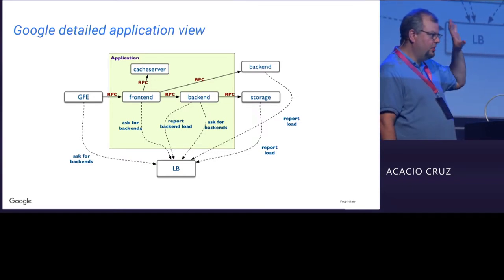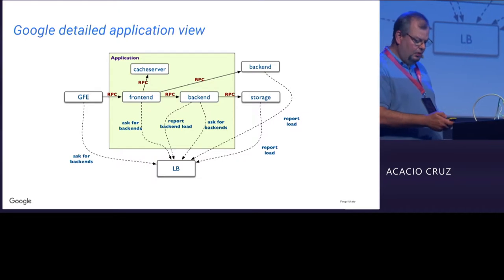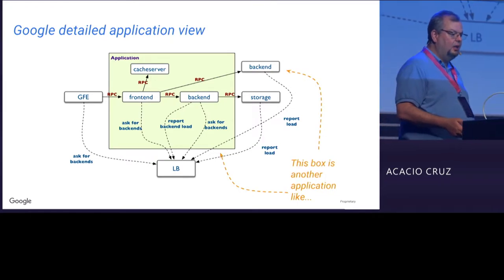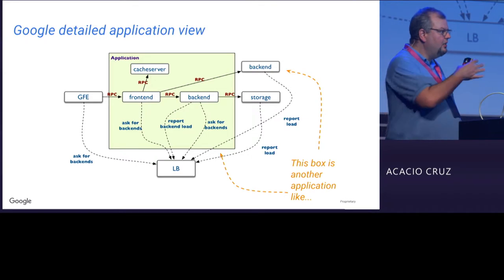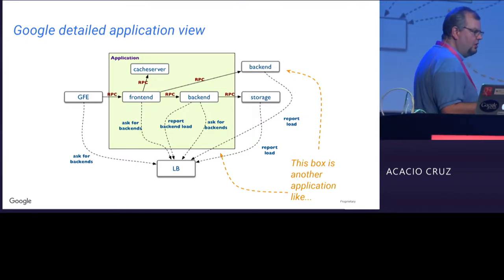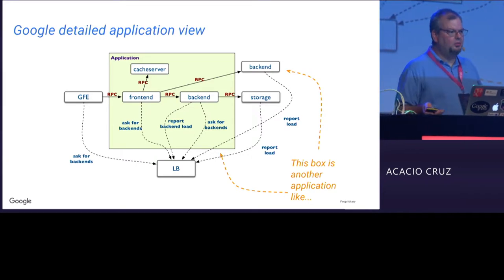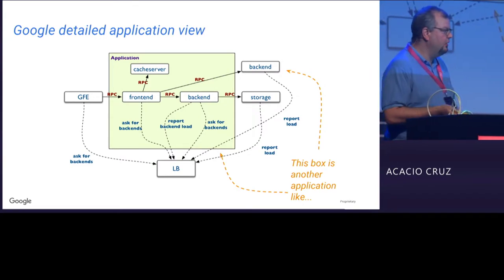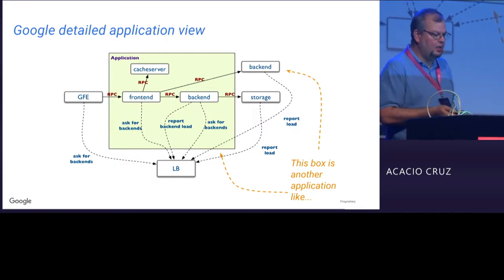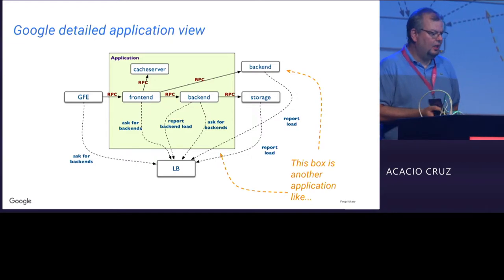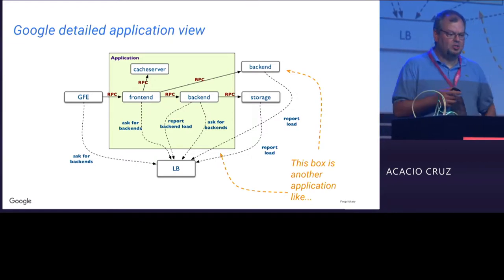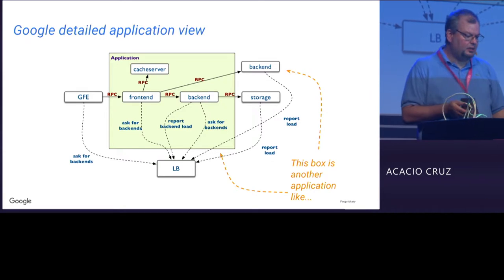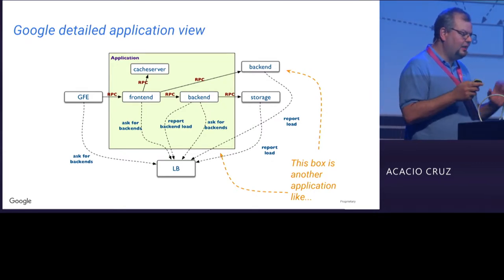Typically applications are structured with a front end and back end, which then call another storage layer or another back end. This happens in many, many layers. Every click you do probably crosses five, ten, twenty of these boxes before you get a reply. The biggest structural difference from a lot of application stacks out there is that we do load balancing at every single hop — not just at the beginning of the stack, but every single connection is load balanced.